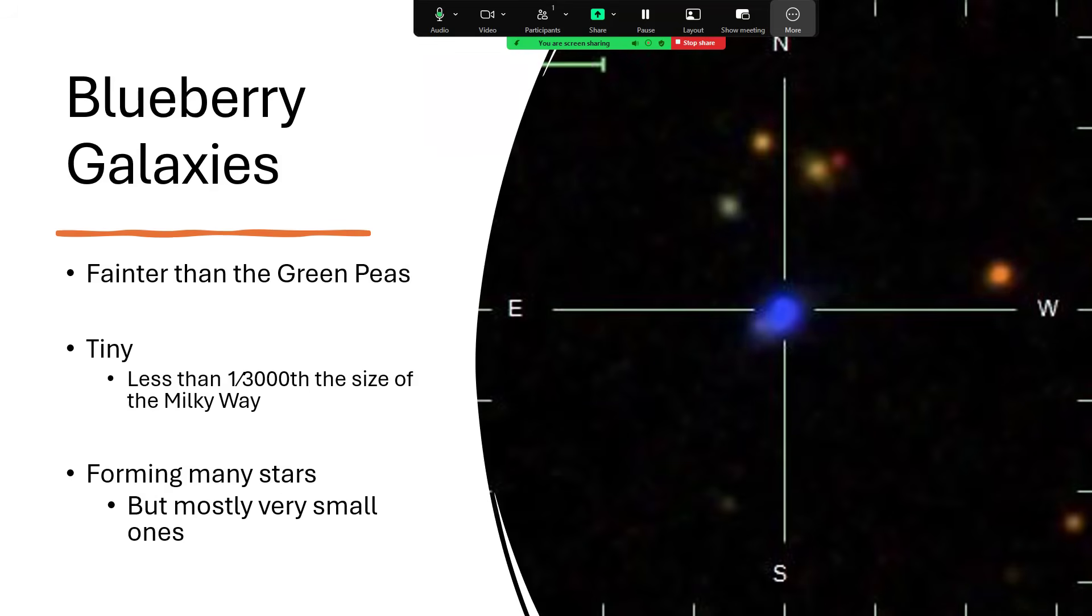So very tiny indeed, but still forming a lot of stars, although mostly they seem to be forming very small stars. I guess with not much mass it's much harder to get together enough material to form giant stars.